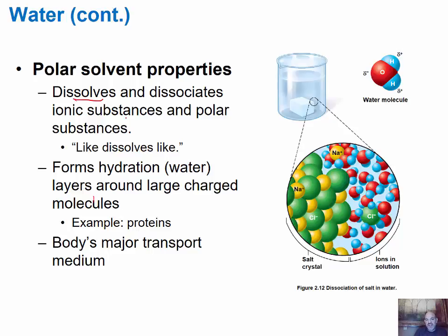Water is also a good polar solvent — it dissolves and associates with ionic substances and polar substances. The useful rule to remember is 'like dissolves like.' Because the water molecule has partial negative and partial positive sides, it is attracted to other polar molecules and to ions. As shown in this diagram, water molecules form hydration layers around charged or polar molecules — the negative oxygen side surrounds the positive sodium ion and moves it away from the salt crystal, while the opposite side of water molecules surrounds the chloride anion, keeping the ions separate.